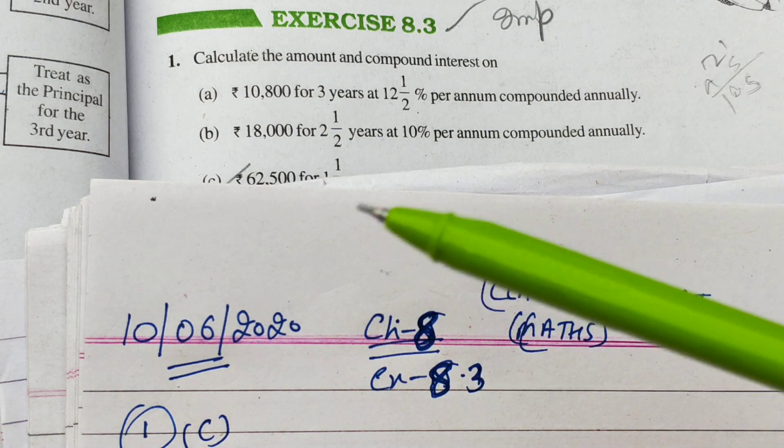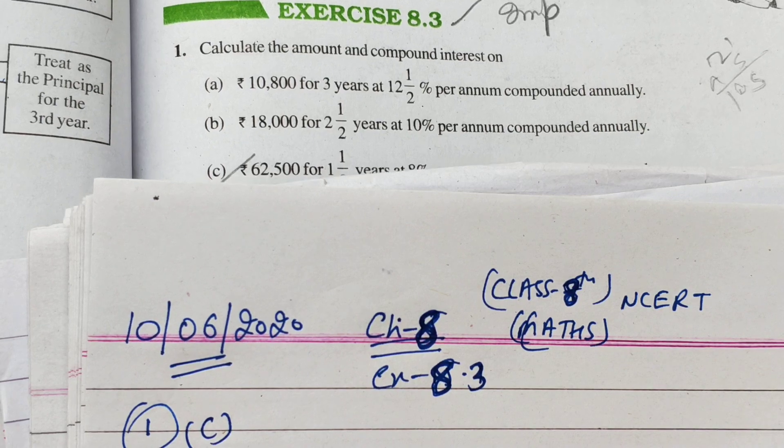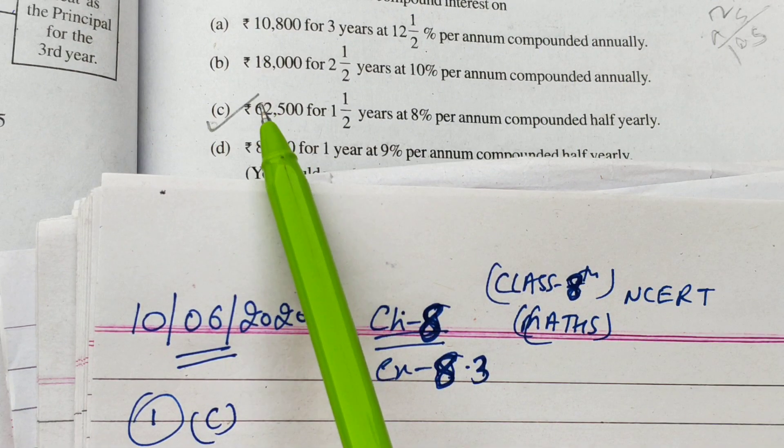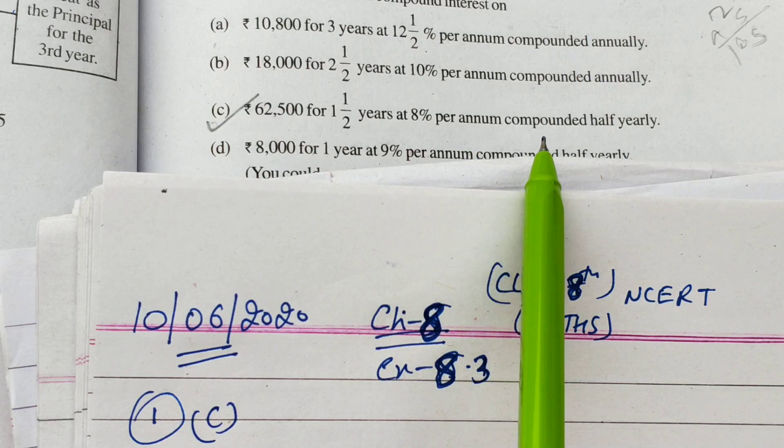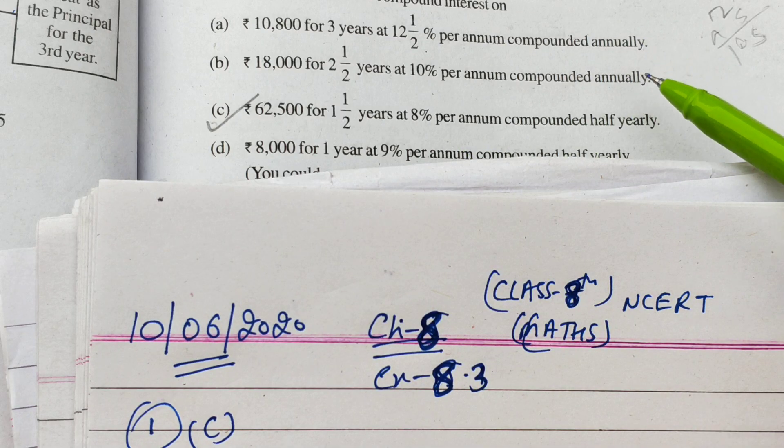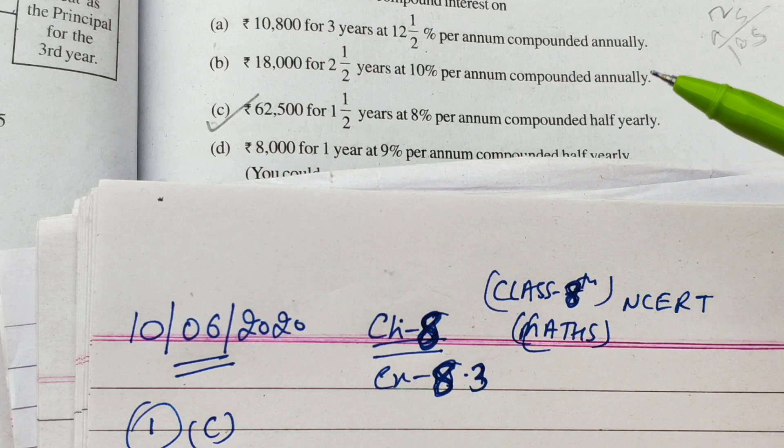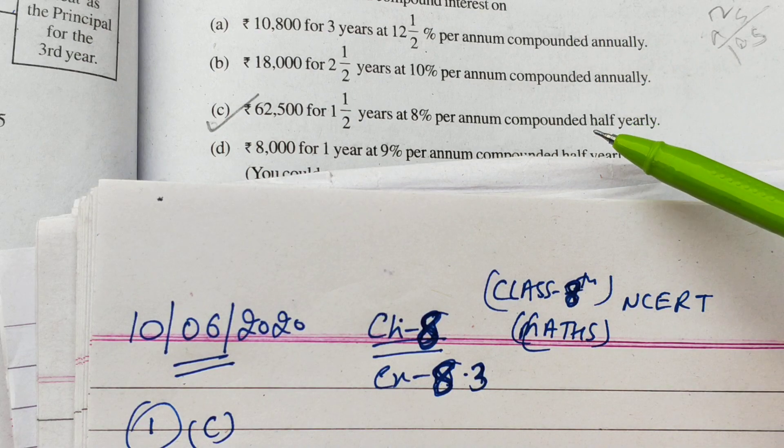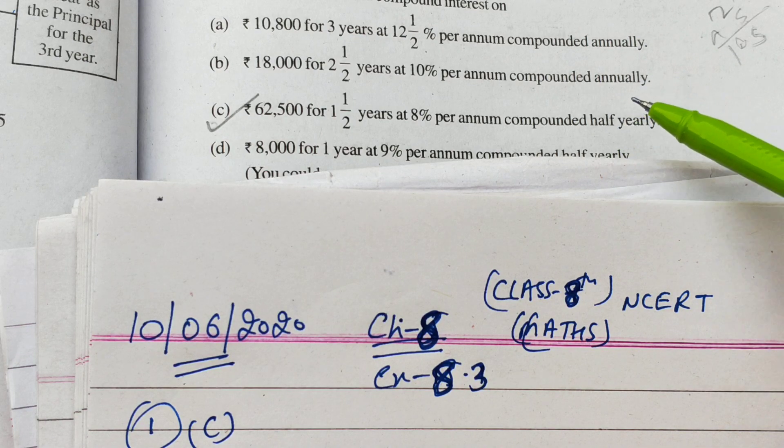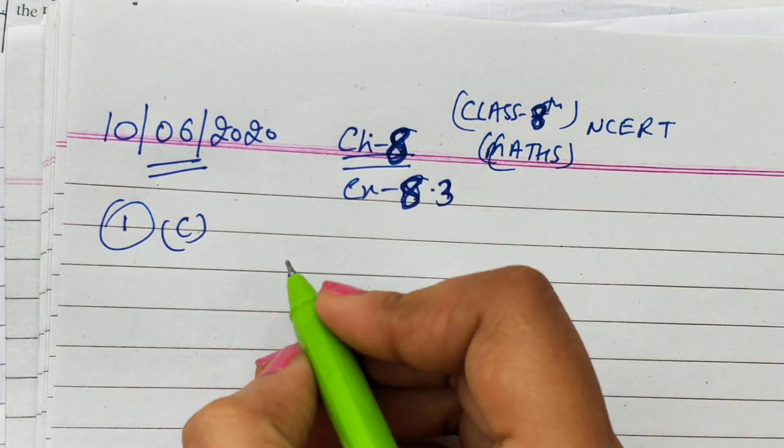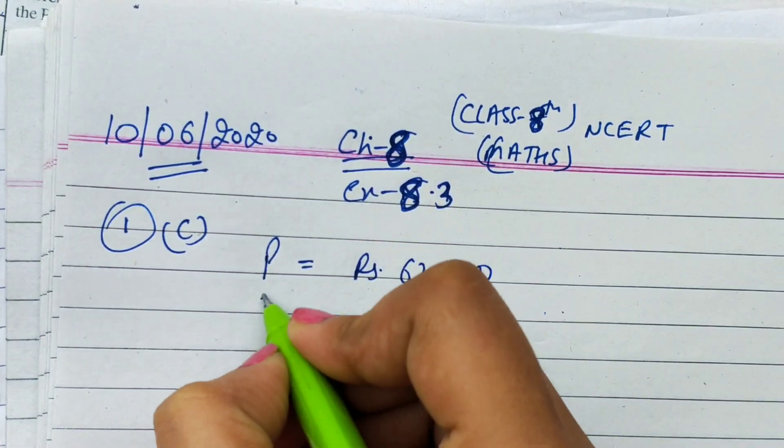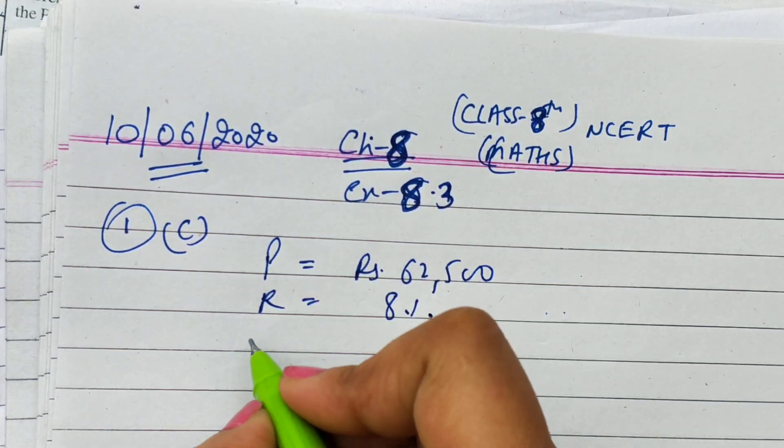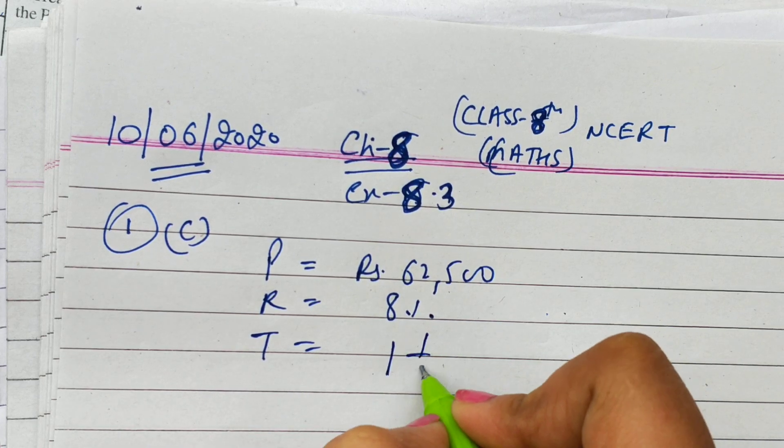Hello everyone, today we are going to start the next part of exercise 8.3 of class 8. Part C is rupees 62,500 for one and a half years at 8% per annum compounded half-yearly. The first two parts were about annually, now we will do half-yearly.